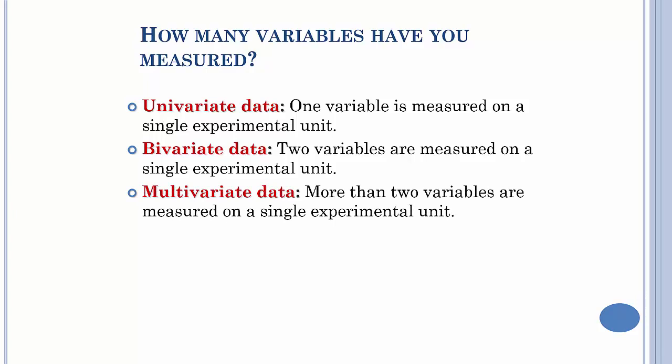Let's say you want to get age, eye color, and hair color. Now you've got multivariate, anytime you have three or more measures on a single unit.